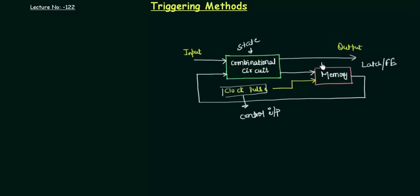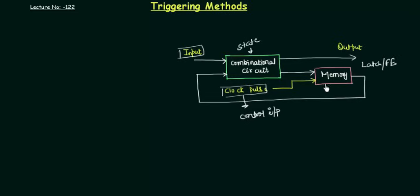What we have to trigger in this sequential circuit is the memory element. The state stored in this latch or flip-flop is switched — meaning changed from one state to the other — depending upon the input and the previous state stored in it. It is changed or switched by the change in the control input. When the clock pulse changes, it causes a change in the latches or flip-flops, altering the stored state. This transition we call the triggering of the flip-flop.